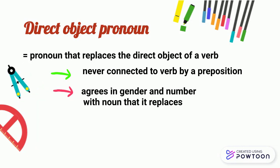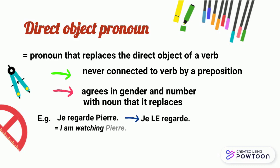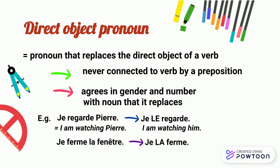For instance, je regarde Pierre — je le regarde. I am watching Pierre — I am watching him. Je ferme la fenêtre — je la ferme. I'm closing the window — I'm closing it.